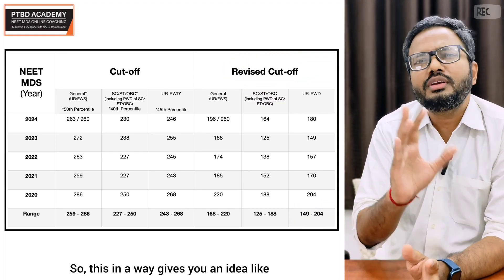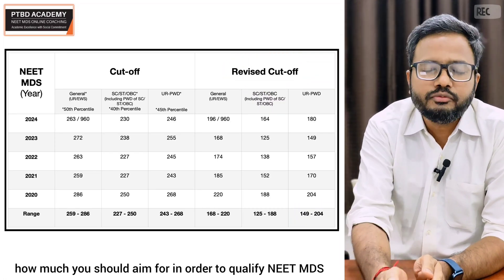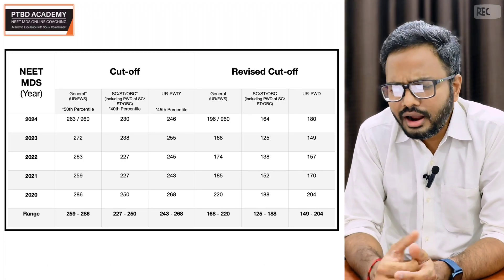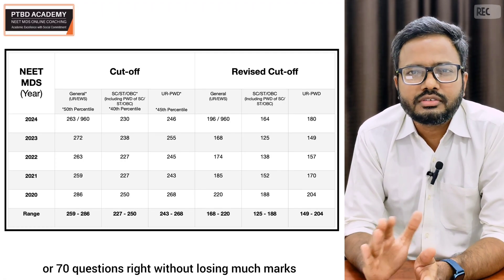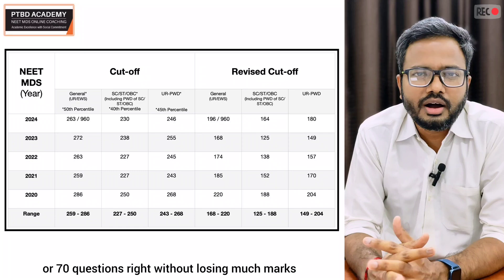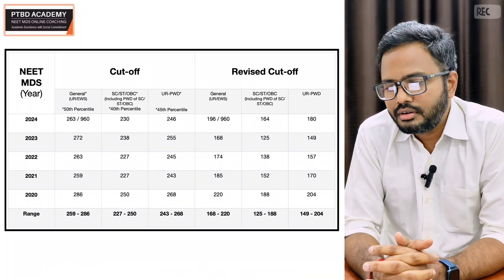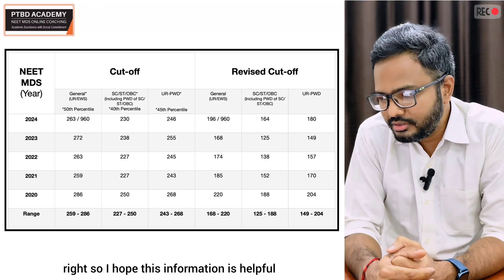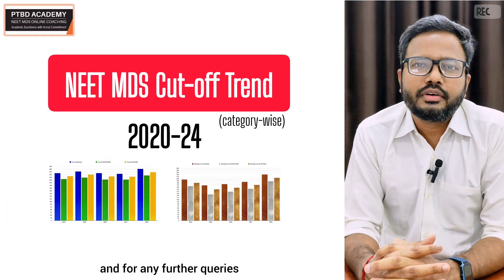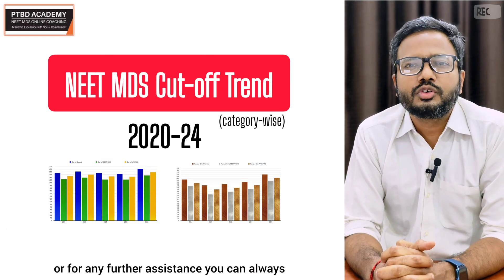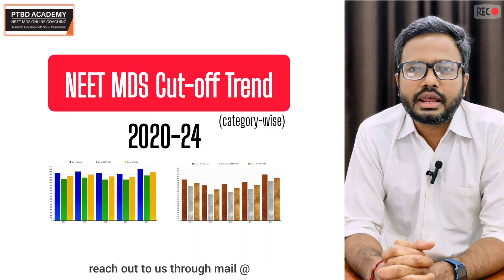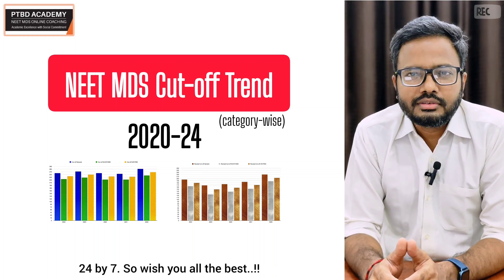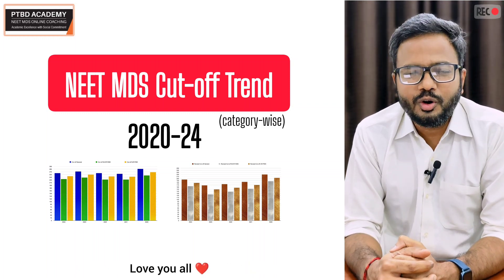This gives you an idea of how much you should aim for in order to qualify in NEET MDS. You should aim to get around 60 to 100 questions right without losing many marks due to negative marking. I hope this information is helpful, and for any further queries you can reach out to us at proudtobillion.dis@gmail.com, 24 by 7. Wish you all the best — love you all!